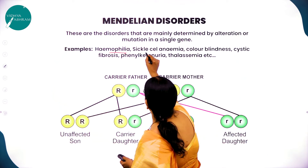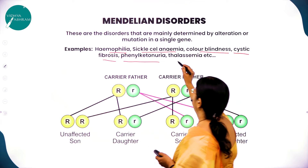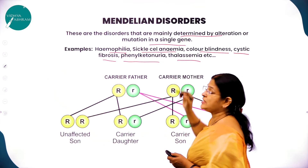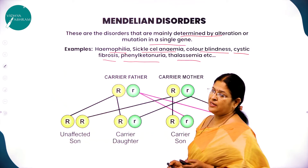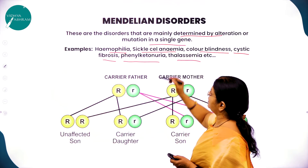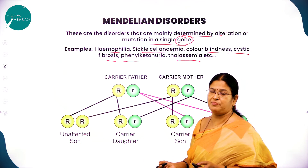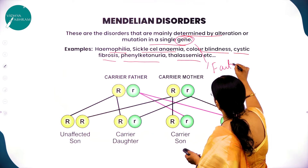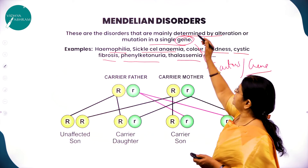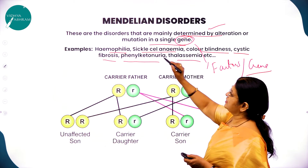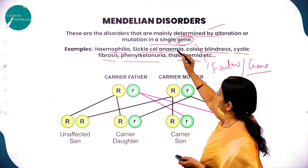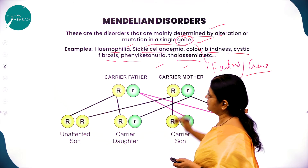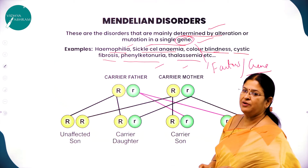Mendelian disorders are mainly determined by alteration or mutation in a single gene. Examples include hemophilia, sickle cell anemia, color blindness, cystic fibrosis, phenylketonuria, and thalassemia. These are called Mendelian disorders because Mendel originally referred to genes as factors, and later those factors were named genes.